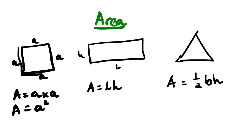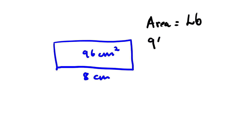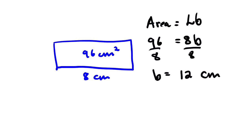Looking at the area, we have this dimension and this one, but we are looking for the missing side. To solve our question, we have 96 centimeters squared as the area and 8 centimeters as the known side. So we say: area equals length multiplied by breadth, which gives us 96 = 8 × b. We divide both sides by 8, and we find that our breadth is actually 12 centimeters.